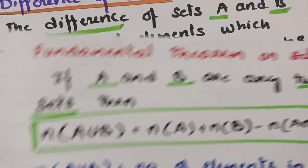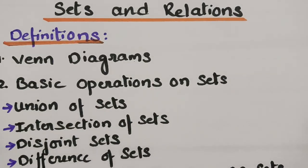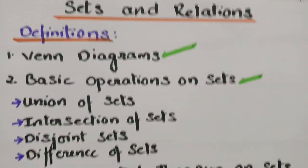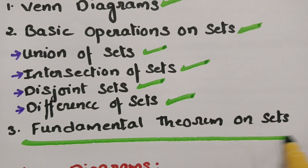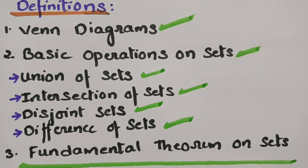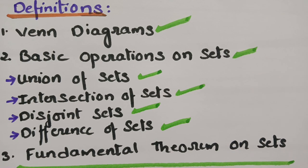In this video I have explained in detail about Venn diagrams and the basic operations on sets — which are union, intersection, disjoint sets, and difference of sets — and the fundamental theorem on sets. These are all the basic things in sets and relations. If you have an idea of what union, intersection, disjoint, and difference are, you will be able to solve many problems related to these topics. If you really like this video, please give it a thumbs up, share it with your friends, and subscribe to this channel.